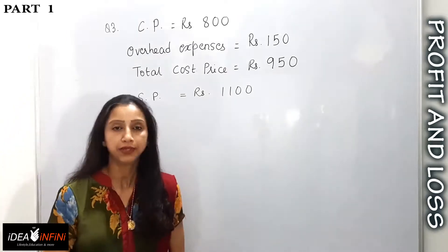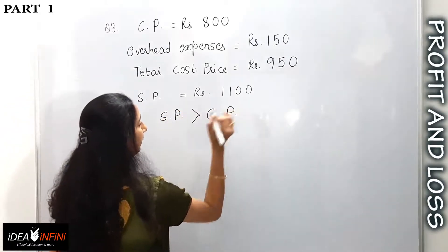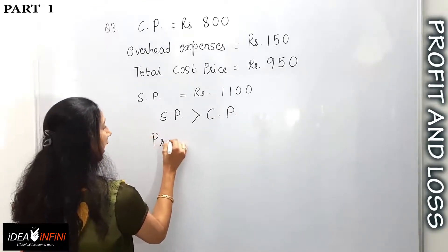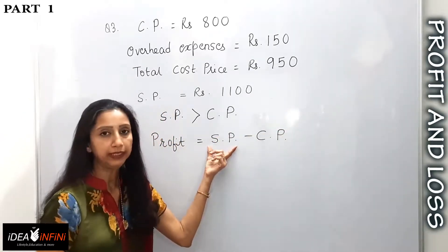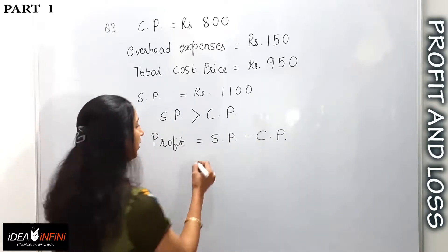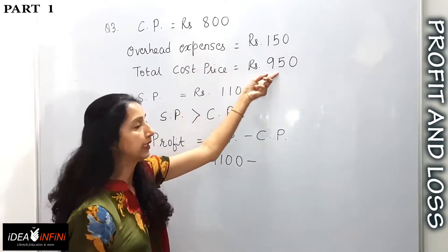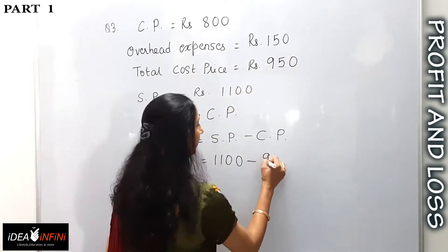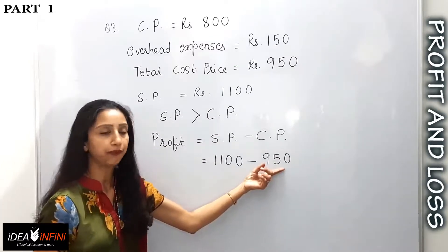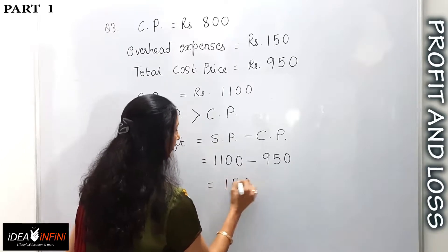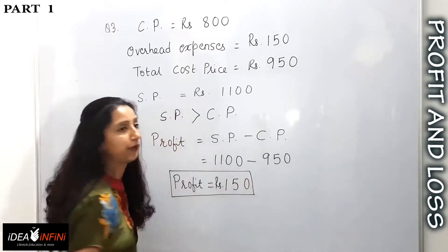Now the selling price is rupees 1100. Since SP is greater than the total CP of rupees 950, it is a profit case. Profit = SP minus CP (inclusive of overhead expenses) = 1100 minus 950, which gives a profit of rupees 150. So the amount of profit made on this transaction is rupees 150.